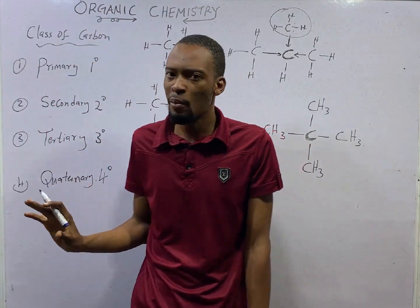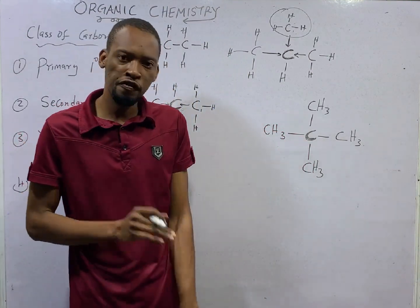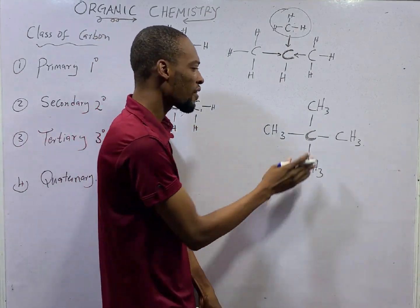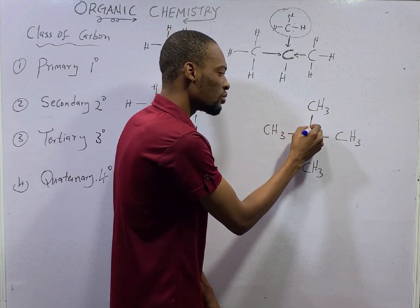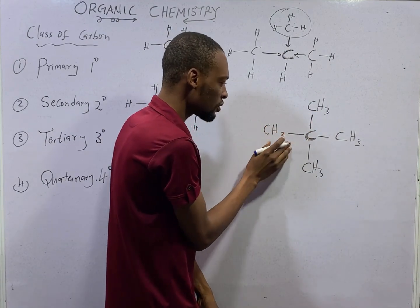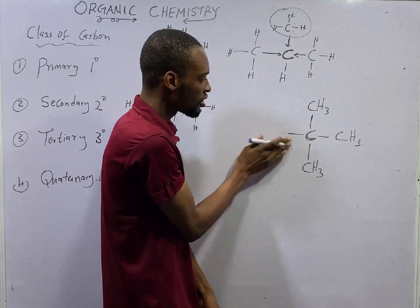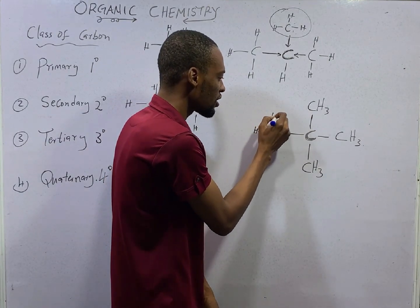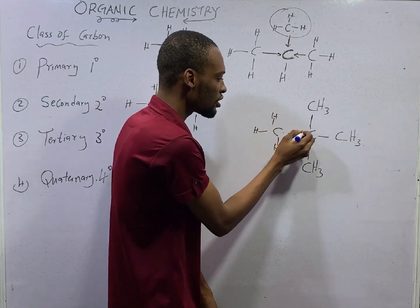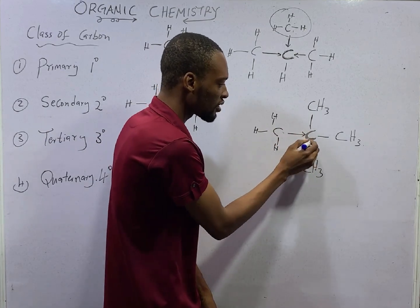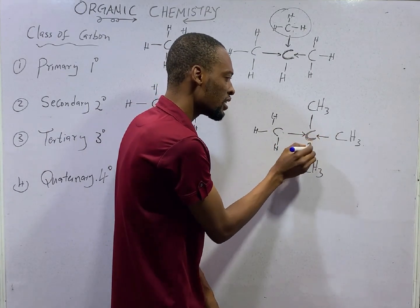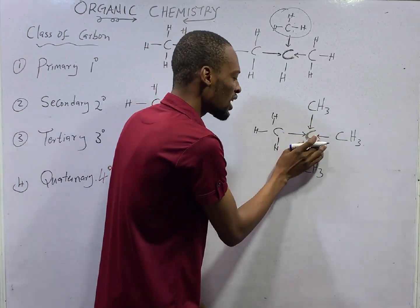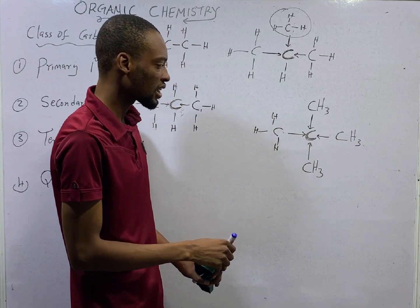Quaternary carbon is a carbon atom that has four other carbons directly linked to it. Looking at this carbon, this carbon is linked to it directly, this one is directly linked to it, this carbon is linked to it directly, and this carbon is linked to it directly. So this particular carbon is a quaternary carbon.